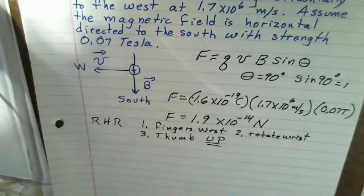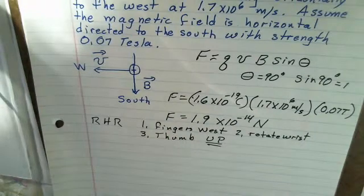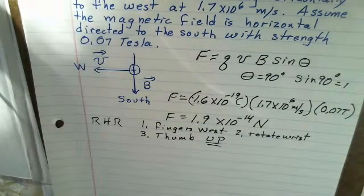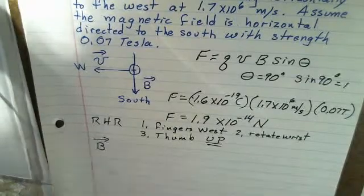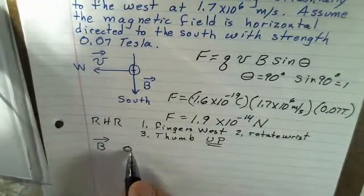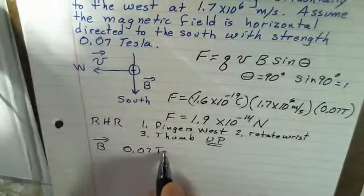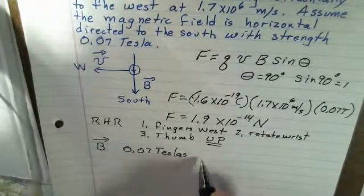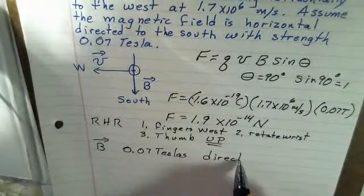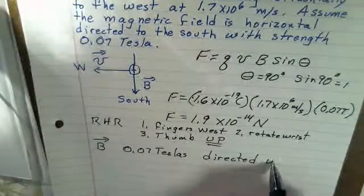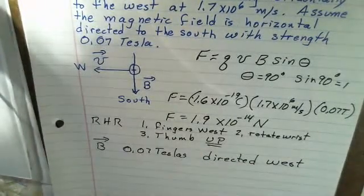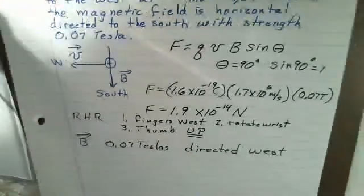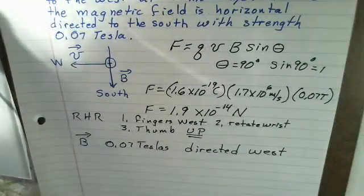Force is a vector, so we have a direction to account for there. Sort of related question, what if the magnetic field, the magnetic field vector, again was 0.07 teslas, and it's directed to the west instead of south. How does that change the analysis for this problem? The magnetic field is 0.07 teslas directed towards the west.